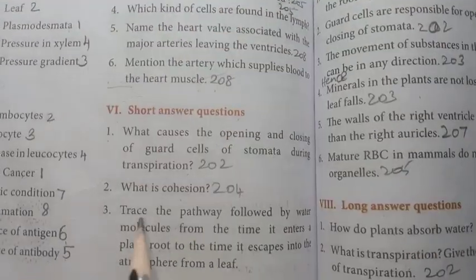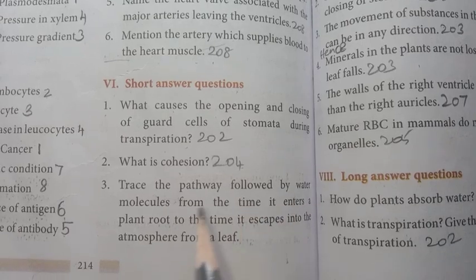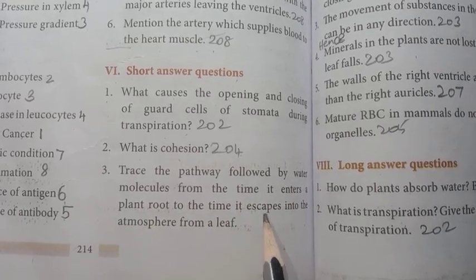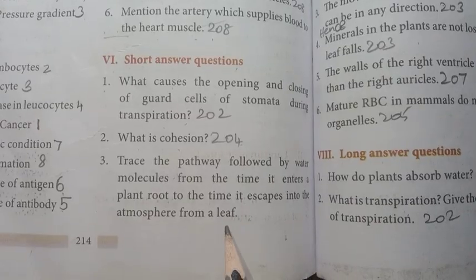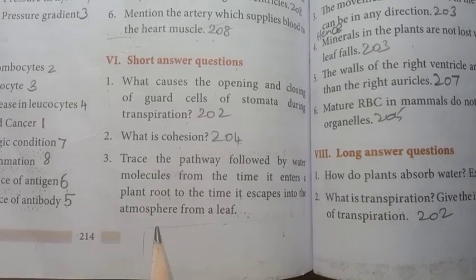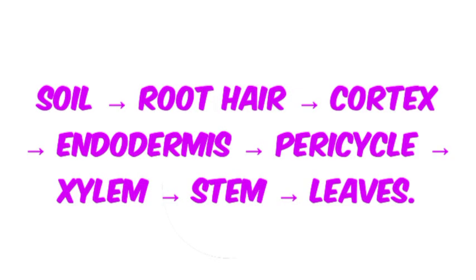Third question: trace the pathway followed by water molecules from the time it enters a plant root to the time it escapes into the atmosphere from a leaf. Answer: soil → root hair → cortex → endodermis → pericycle → xylem → stem → finally leaves.